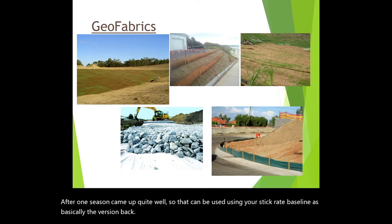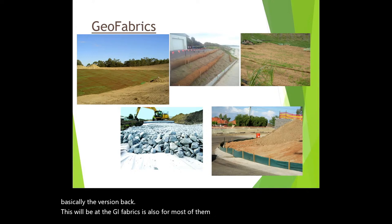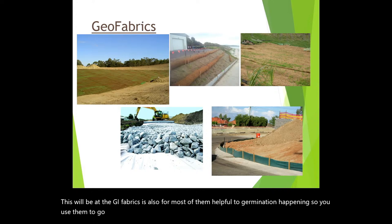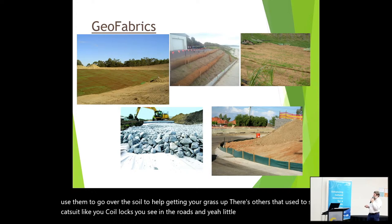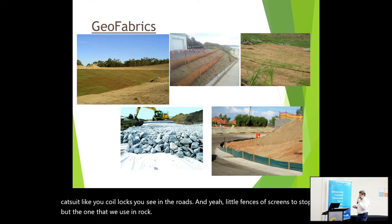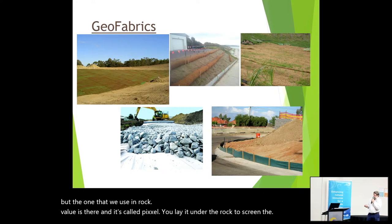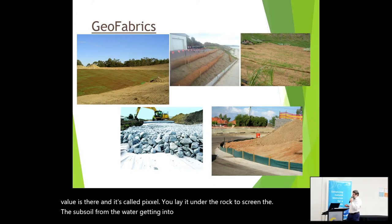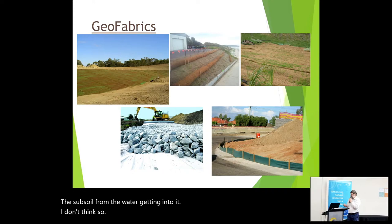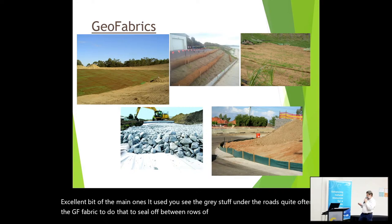Looking at the geofabrics — there are all sorts. Most are helpful to get germination happening, used over the soil to help grass get up. Others trap silt, like coil logs you see on roads, and little fences of screens to stop water. The one used in rock chutes is called Texel — you lay it under the rock to screen the subsoil from the water. Texel and Bidom are the main ones used. You'll see the grey stuff under roads quite often — that's the geofabric to seal off between your erosive subsoils and whatever you're putting on top.